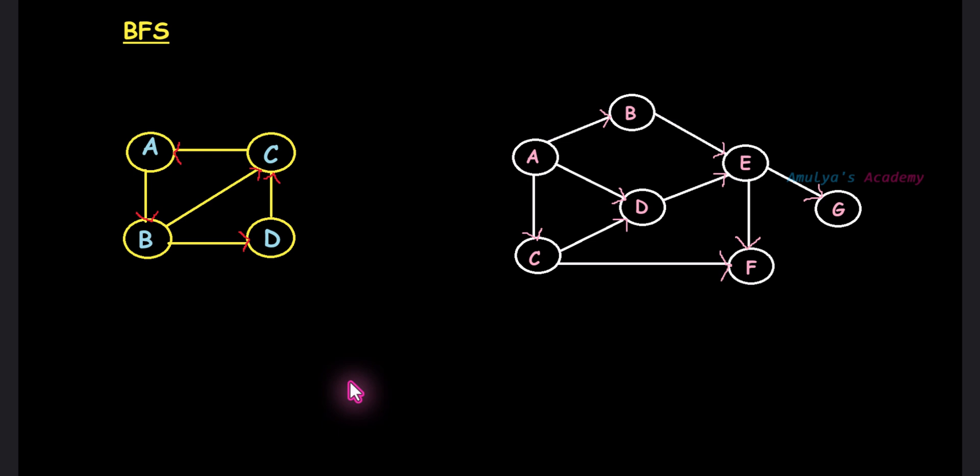Hello and welcome back to Amulya's Academy YouTube channel. We were discussing BFS algorithm. Today let's see how to use BFS algorithm to find whether a given directed graph is a strongly connected graph or a weakly connected graph. A directed graph is said to be strongly connected if every vertex is reachable from every other vertex. A directed graph is said to be weakly connected if it is not strongly connected, but if we consider it as an undirected graph then it is connected.